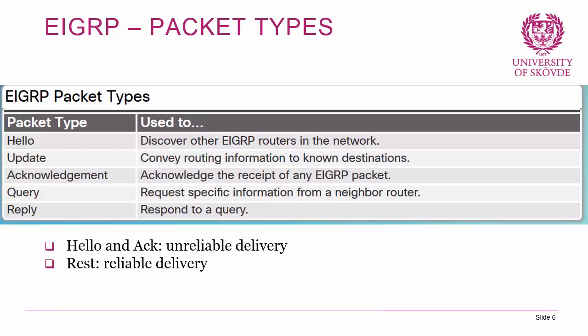Acknowledgement packets confirm receipt of an EIGRP packet. The Query packet is quite interesting — it can be sent to request specific routing information from a neighbor, such as when a local interface goes down and routes are lost. The Reply packet responds to a query, containing routes or confirming no route exists. Hello and ACK packets use unreliable delivery; updates, queries, and replies use reliable delivery.